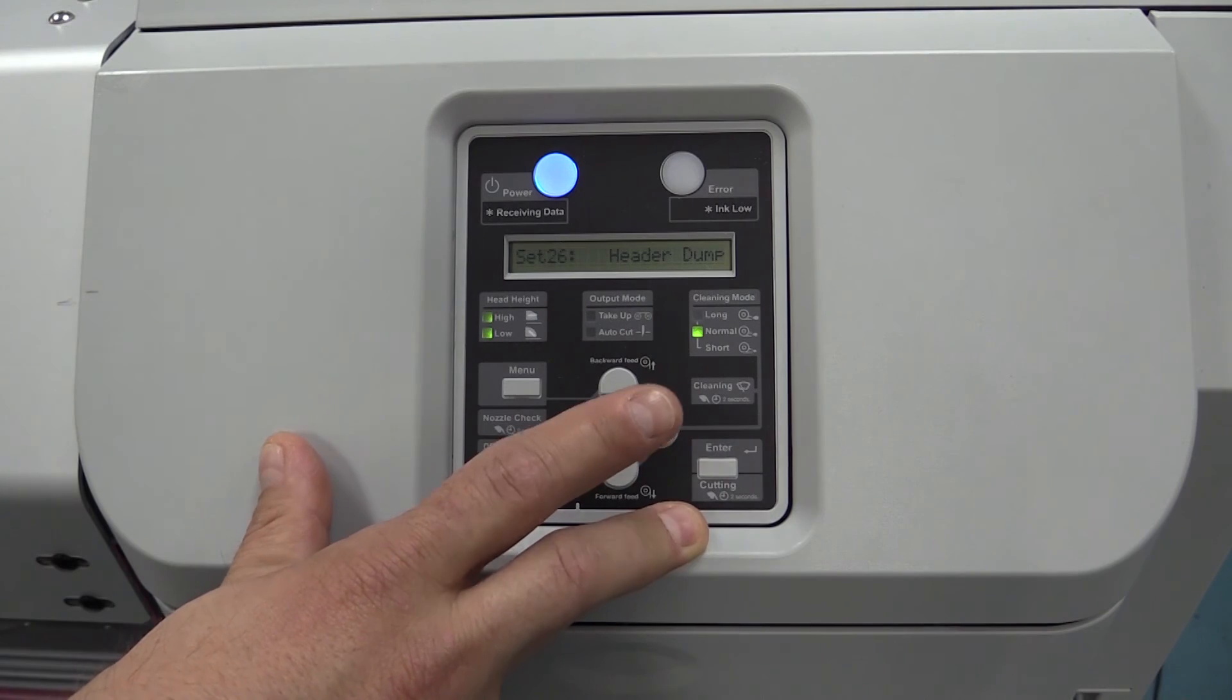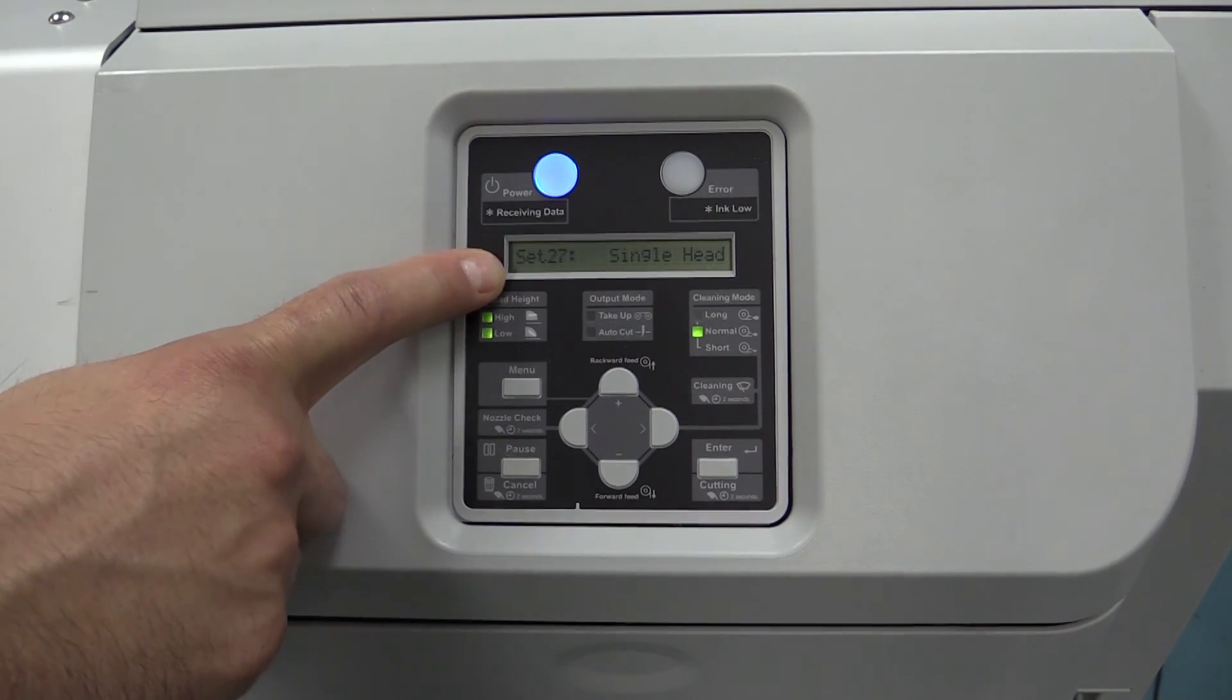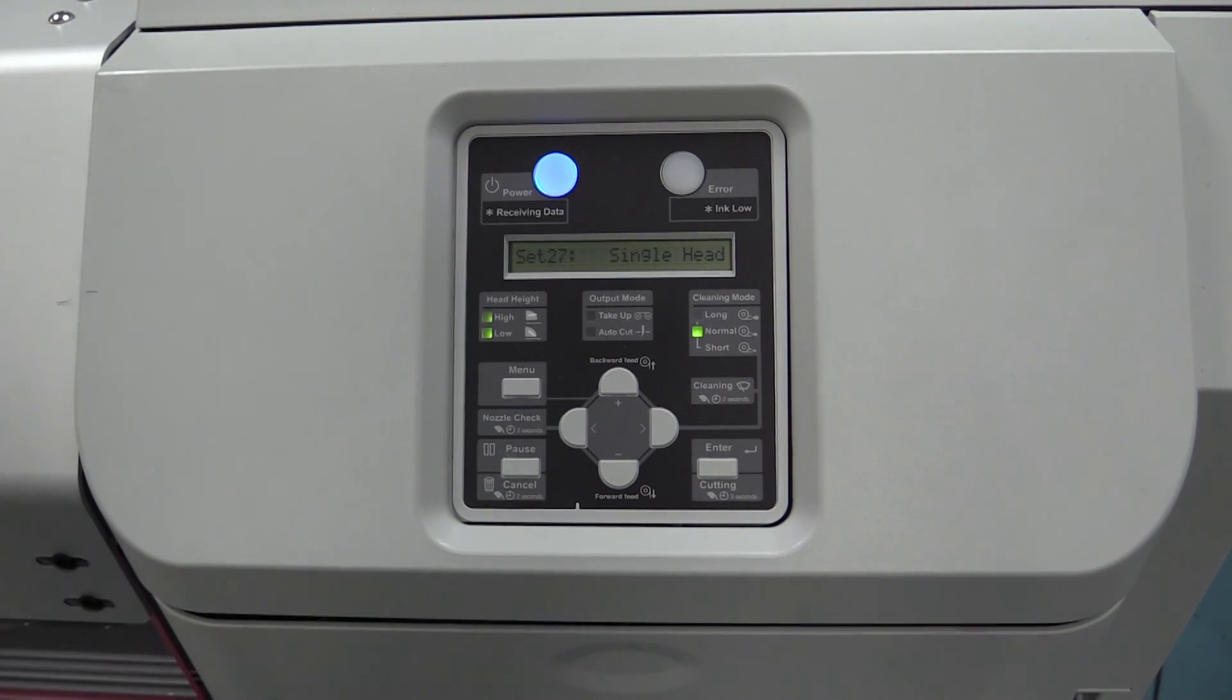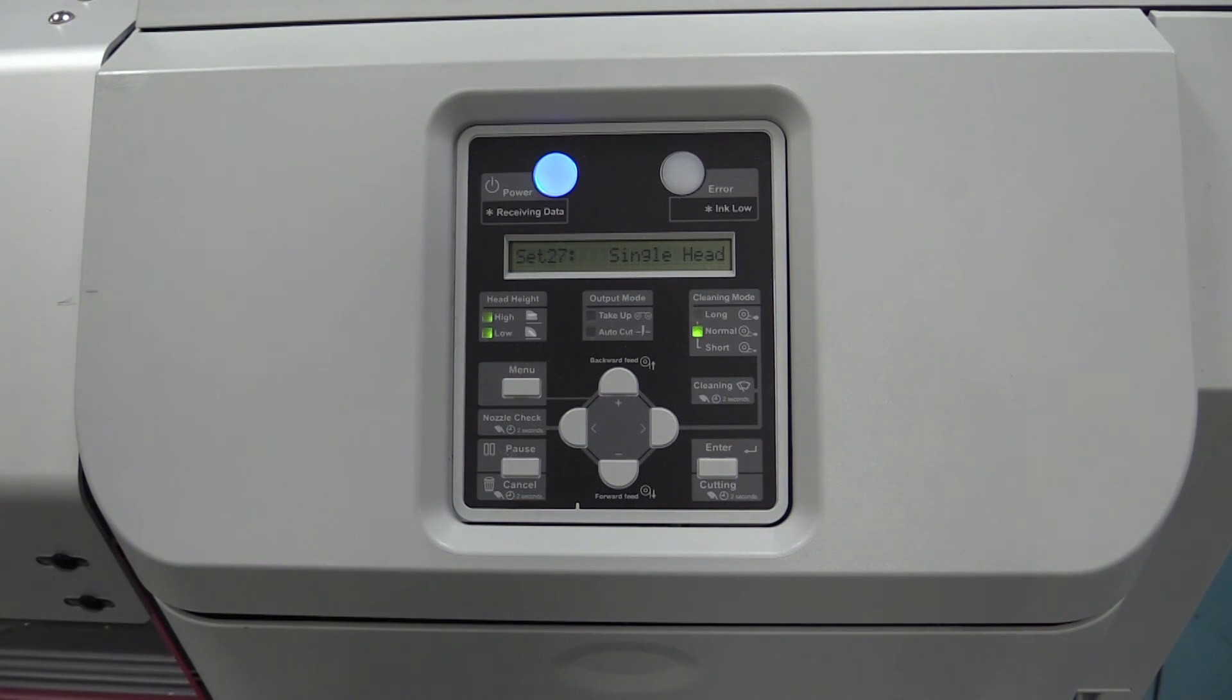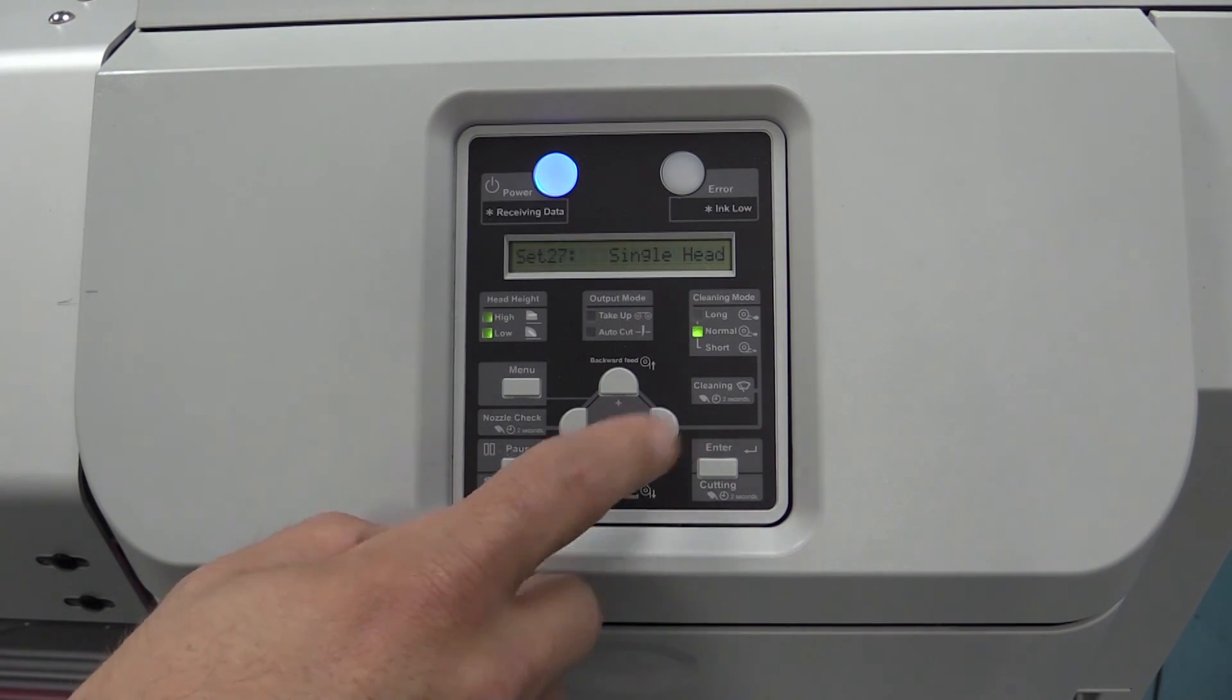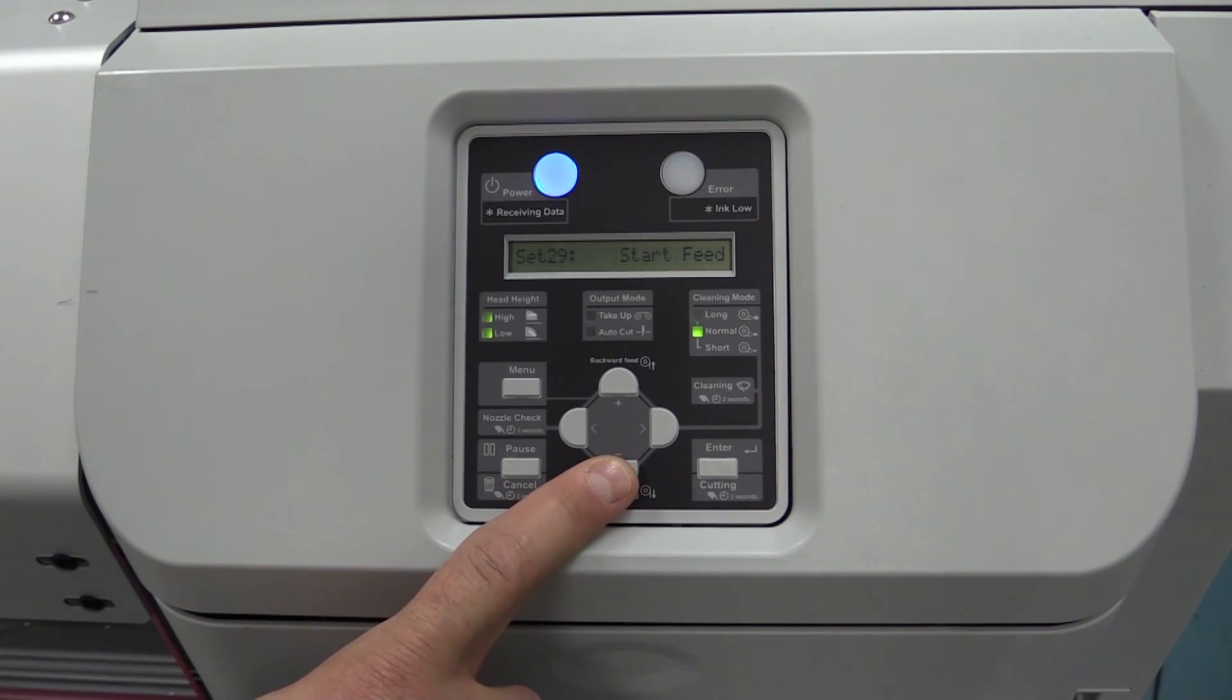Setting 26 we do not have to worry about. Setting 27 is something we use in diagnostic mode only. If we see an issue with one head, since it does have two print heads on the printer, we can shut down individual heads and see if we see a difference in print quality. Settings 28, 29, and 30 we can skip.